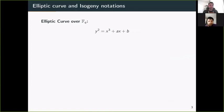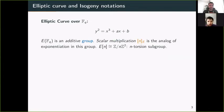Let me give a brief introduction to isogeny-based crypto. Let E denote the curve with affine equation y² = x³ + ax + b. The points over a finite field Fq form an additive group, where scalar multiplication, multiplying a point by n, is the analog of exponentiation in this group. The E[n] is the n-torsion subgroup, elements whose order divides n. As an abstract group, this is isomorphic to ℤ/nℤ².